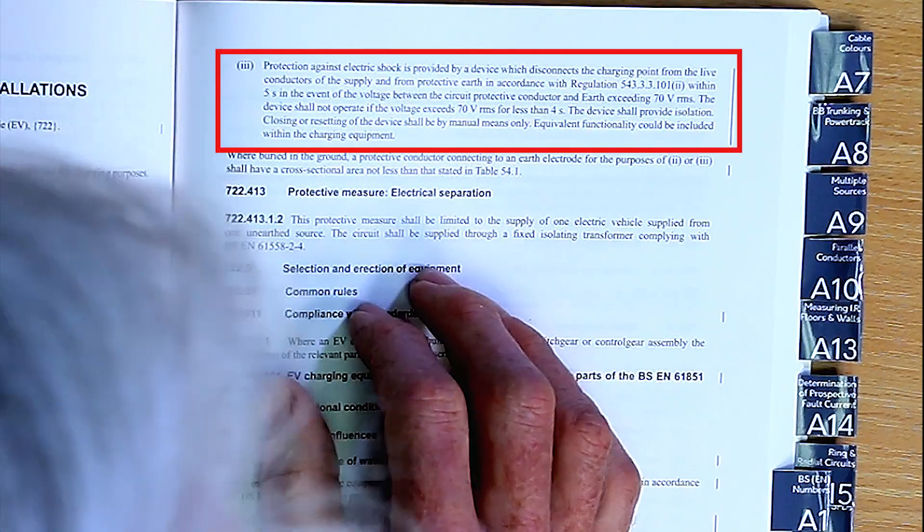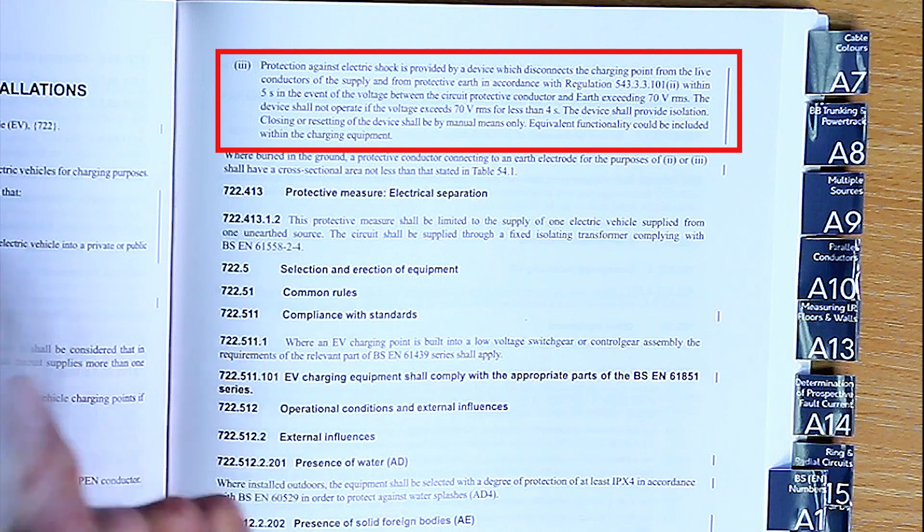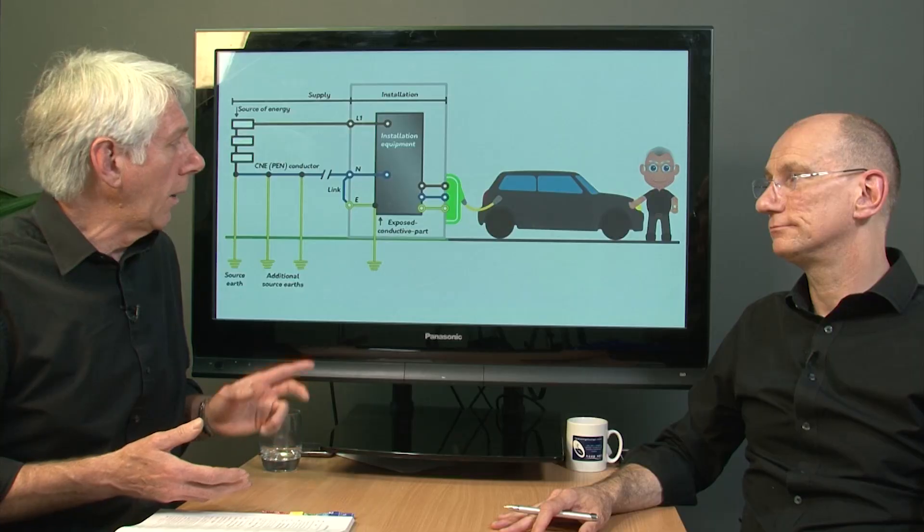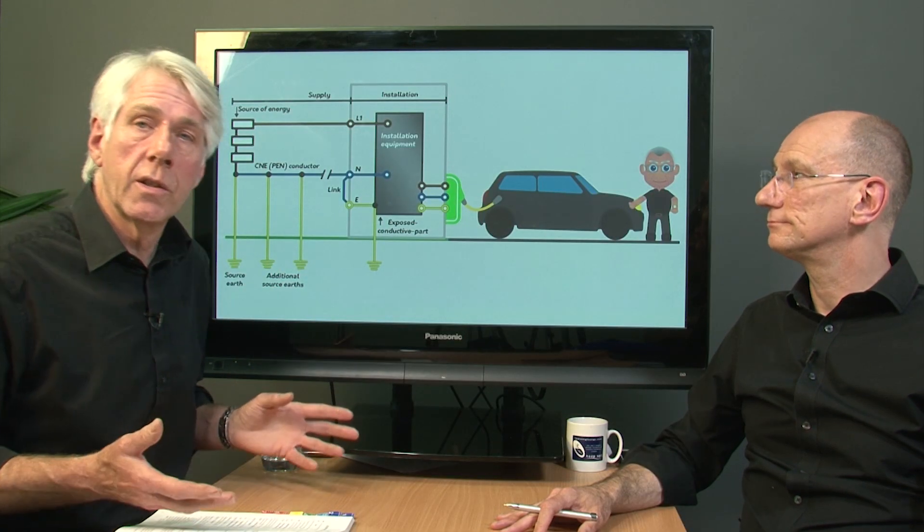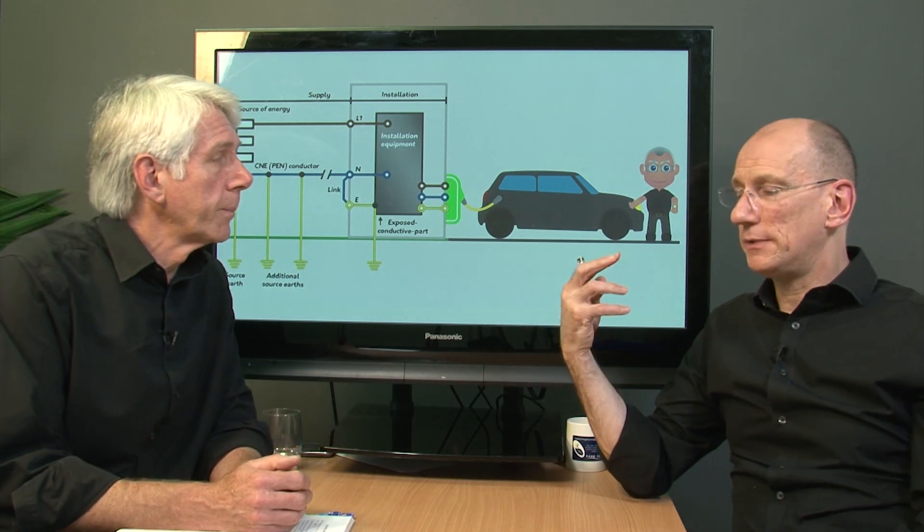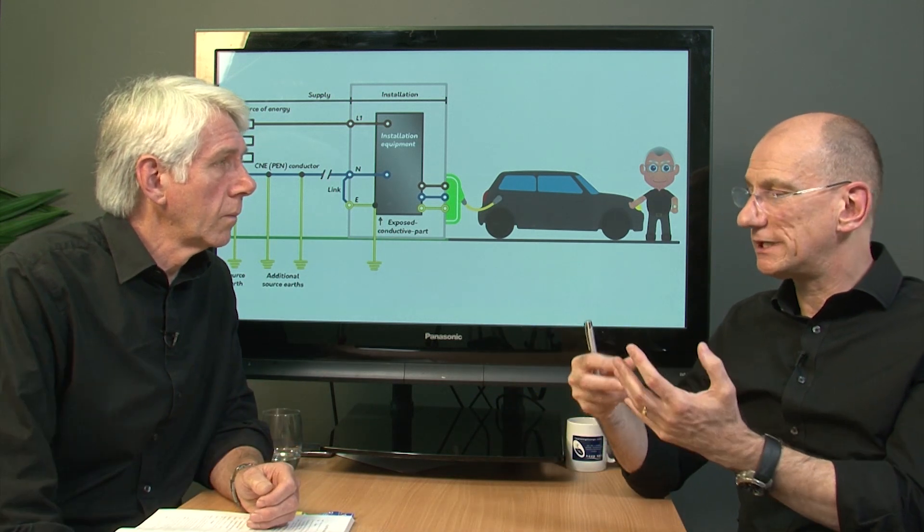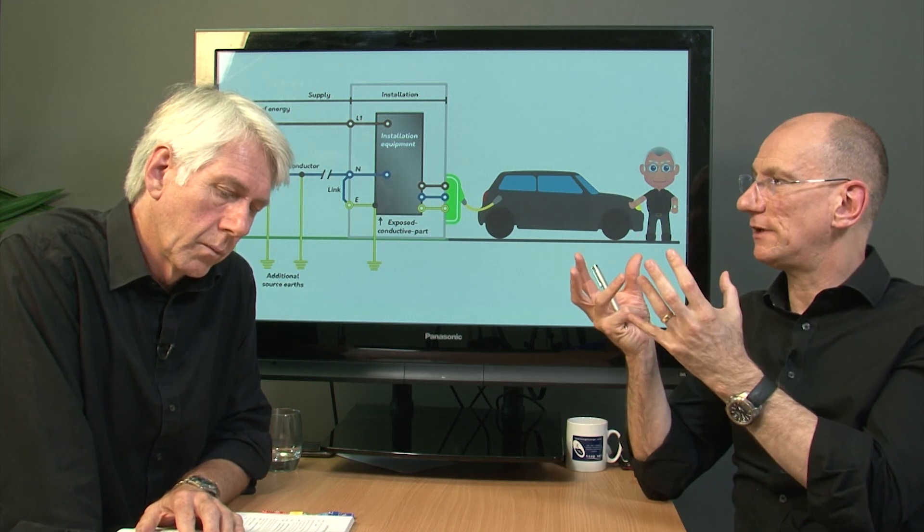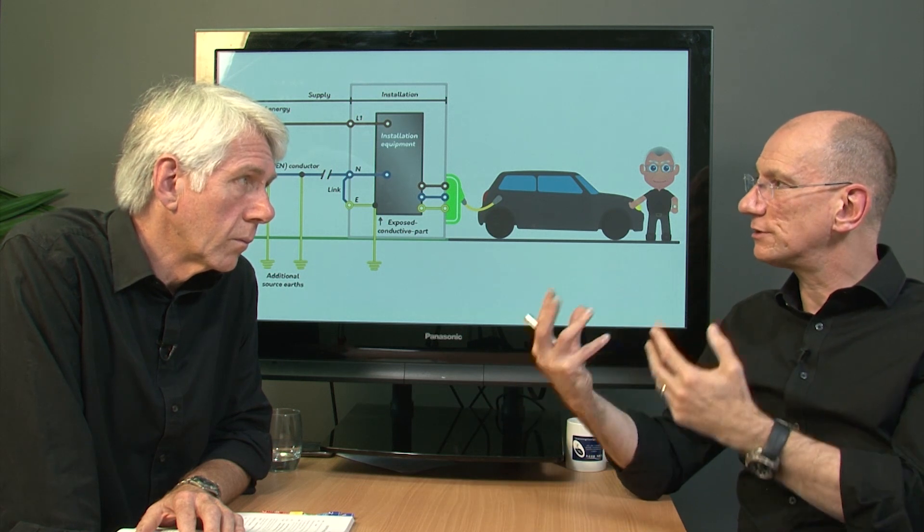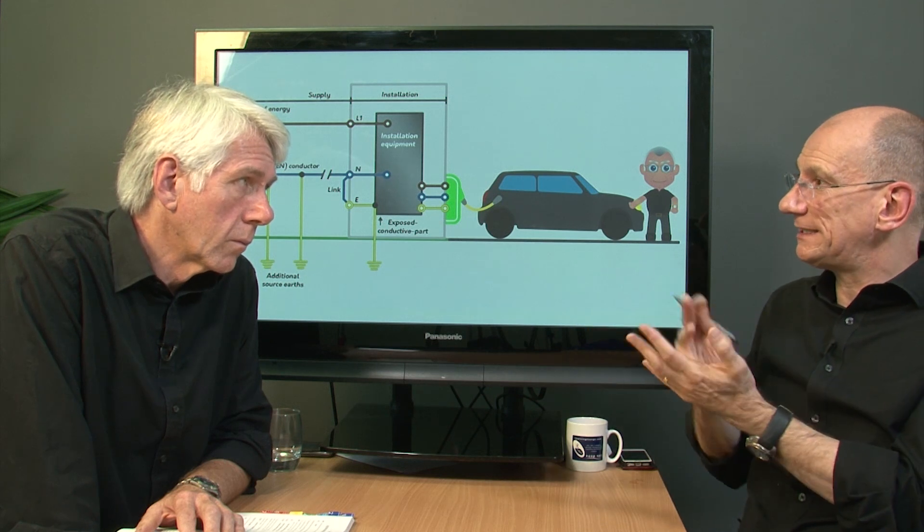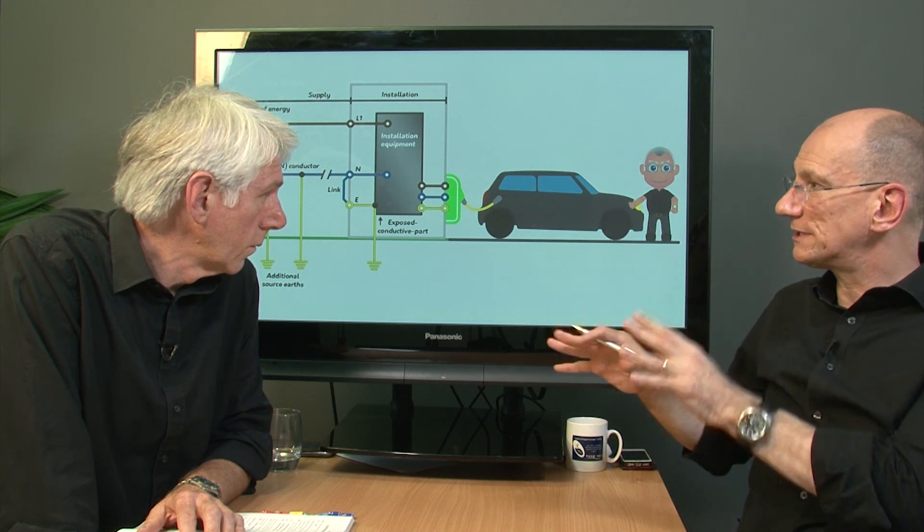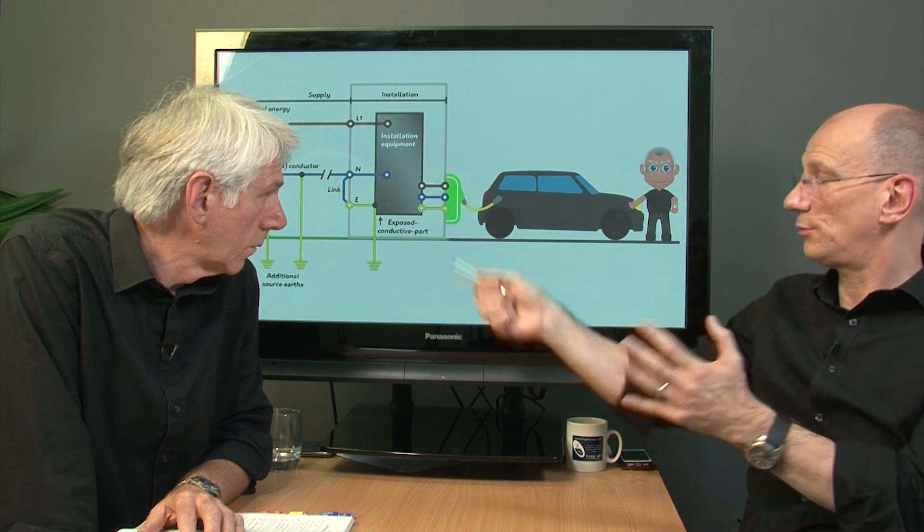Then we have number three. A protection against electric shock is provided by a device which disconnects the charging point from the live conductors of the supply and from protective earth in accordance with regulation 543.3.3. Now, until recently, we were saying no such device exists. But in fact, they are now starting to appear in various forms. Yes. And involved with the charging mechanism itself. Yeah, it could be. I mean, there's a little bit more detail in there that we could just tease out. This particular device that they're talking about never existed in the 17th edition. It was looking to monitor the neutral. And even if you had an RCD and it tripped, the protective conductor is still in contact with the outside metalwork. So even if it disconnected the line of neutral and there was a rise in the potential there, it would probably still export out. So it needs to disconnect the protective conductor at the same time.